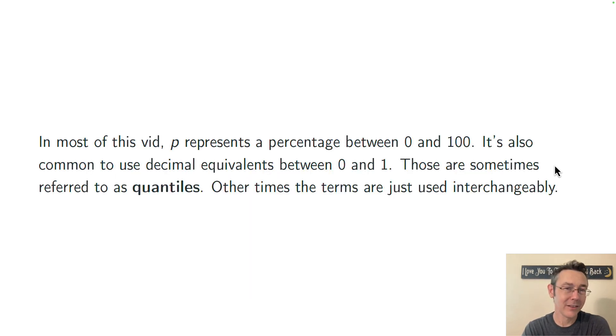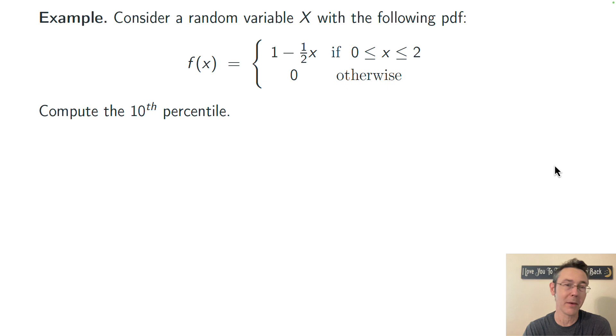Now the terminology is a little bit muddy here, but I don't think that's really a problem. Officially p represents a percentage between zero and a hundred, so it's like an integer or something like an integer, but you'll also see sometimes it's written with decimal equivalents. So instead of 50% you'll see 0.5. Those decimals are sometimes called quantiles. A lot of times the terms are just used interchangeably.